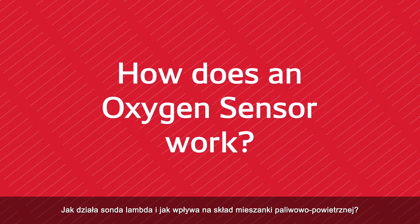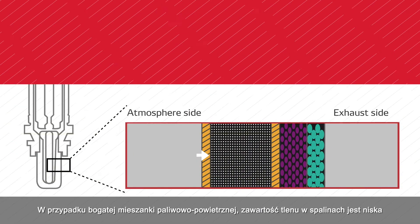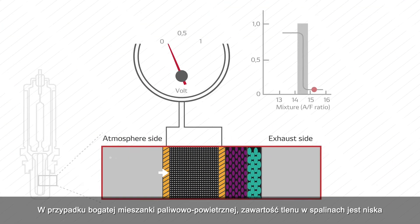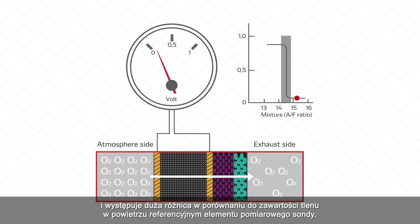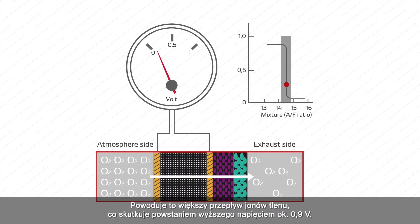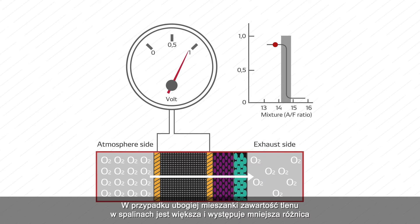When a rich air-fuel mixture exists, the oxygen content in the exhaust gas is low, so there is a large difference in the oxygen content across the element. This produces a higher flow of oxygen ions, resulting in a high voltage signal of around 0.9 volts.